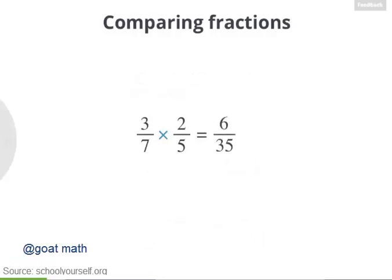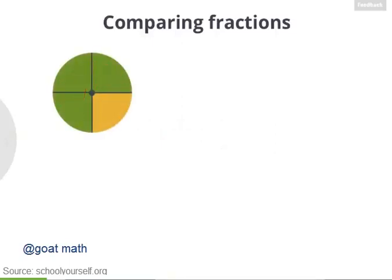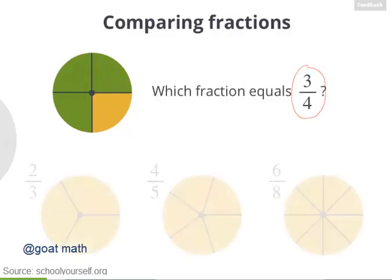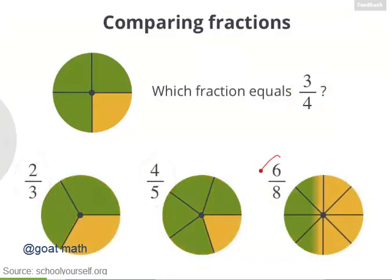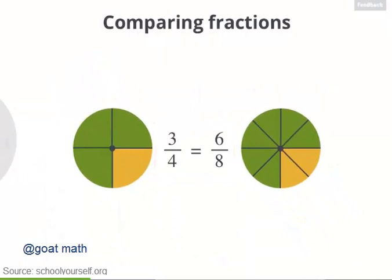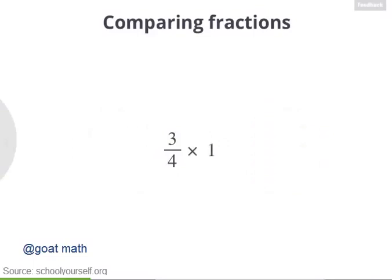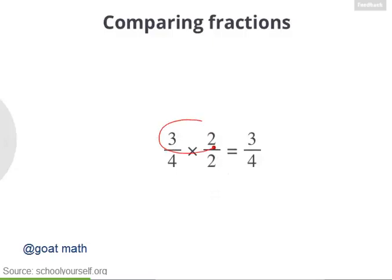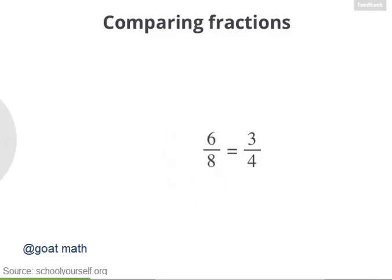Let's look at equivalent fractions. This green region represents 3 fourths. Which other fraction equals 3 fourths — is it 2 thirds, 4 fifths, or 6 eighths? So 3 fourths is equivalent to 6 eighths — two ways to write the same number. If we multiply 3 fourths by 1, we still get 3 fourths. Another way to write 1 is 2 divided by 2, or 2 halves. Plugging in 2 halves and multiplying the two fractions gives 6 eighths. So 6 eighths and 3 fourths are equal.